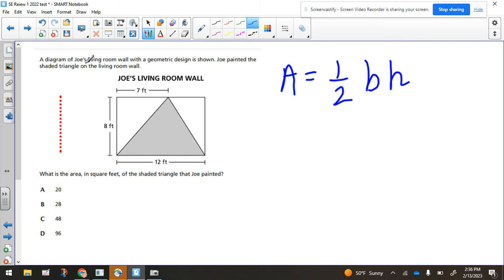Hey everybody, this is Bianchi. A diagram of Joe's living room wall with a geometric design is shown. Joe painted the shaded triangle on the living room wall. So shaded triangle means this right here. What is the area in square feet of the shaded triangle that Joe painted?